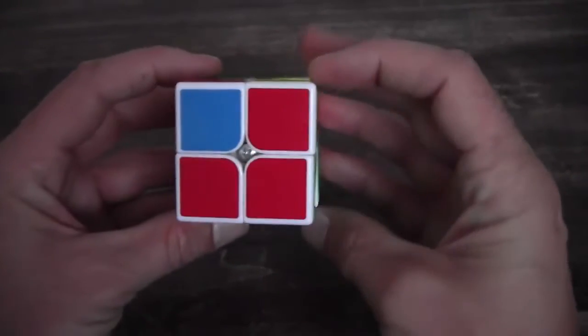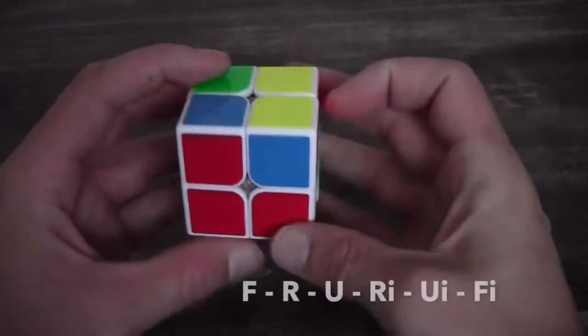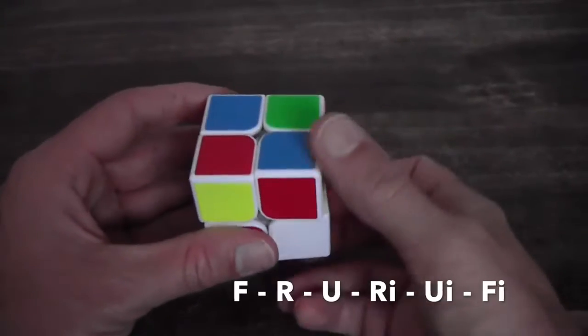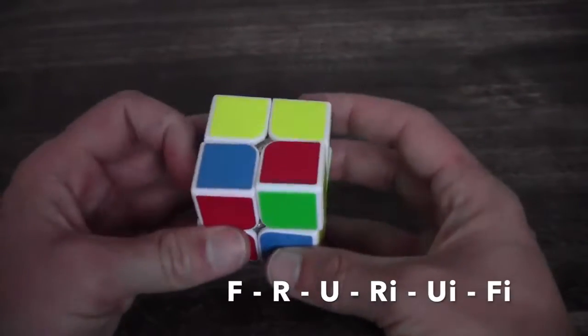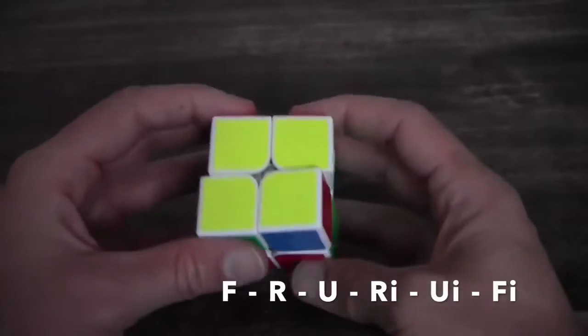And you perform the following algorithm: F and then the sexy move again - R U R inverse U inverse and with an F inverse you complete the yellow square.